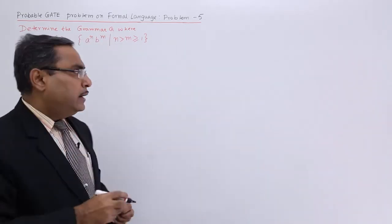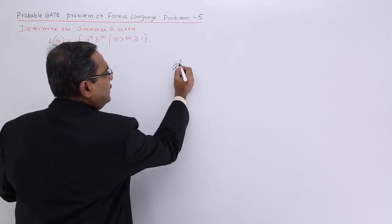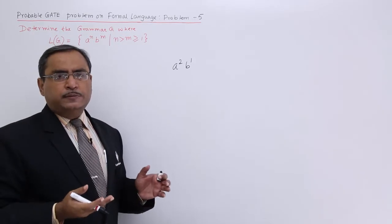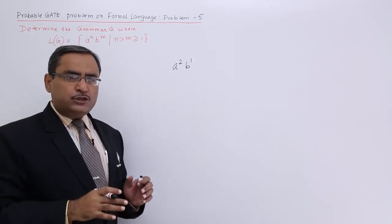That means this particular grammar can produce string like a squared b to the power of 1. This is the minimum string it can produce, so that has to be taken into account.